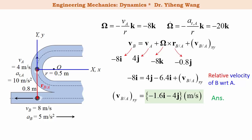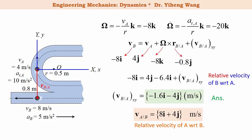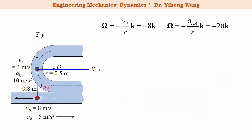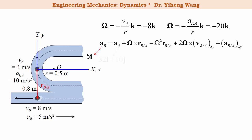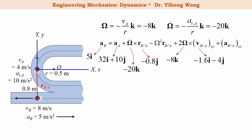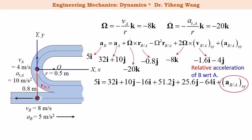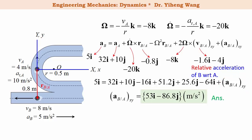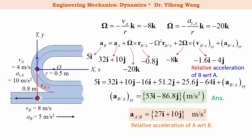Notice how different this result is from the relative velocity of object A with respect to B. Similarly, for the relative acceleration of object B we use the acceleration equation. We know the absolute acceleration of object B and of object A — don't forget this acceleration has both normal and tangential components. We also know the angular acceleration of the rotating frame, the same relative position vector, the angular velocity of the rotating frame, and the relative velocity of B with respect to A that we just determined. Therefore, the only unknown is the relative acceleration of B with respect to A, which we solve for. Again, please notice how this is different from the relative acceleration of A with respect to B.